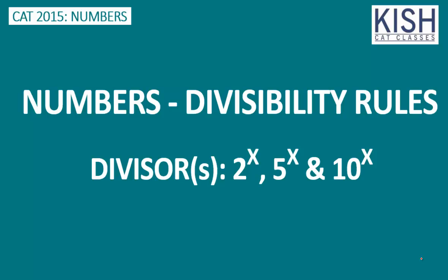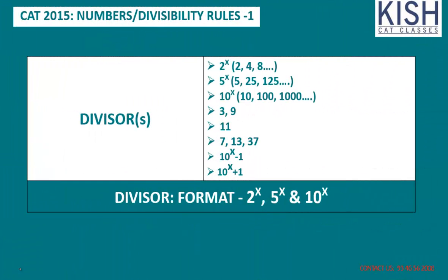First let's check what divisors we are going to cover in this session. I'm going to take divisors which are of the format 2^x, 5^x, or 10^x. The divisors frequently asked in CAT include numbers of those formats, while 3, 9, 11, 7, 13, 37 are a bit rare. Numbers of the format 10^x minus 1 or 10^x plus 1 are very important ones.